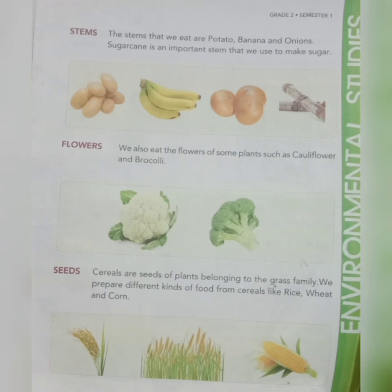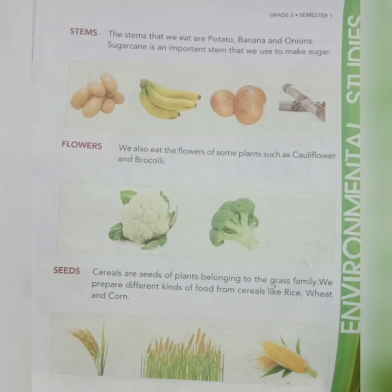Cereals are seeds of plants belonging to the grass family. We prepare different kinds of food from cereals. Examples are rice, wheat and corn. These are different types of food items — these are cereals.